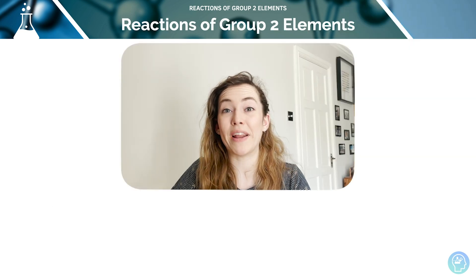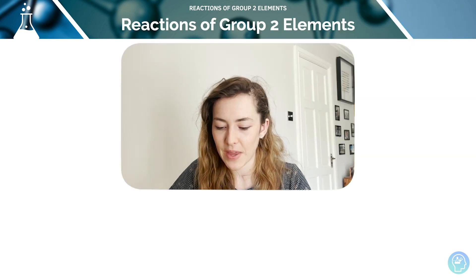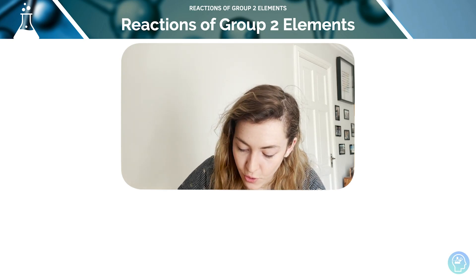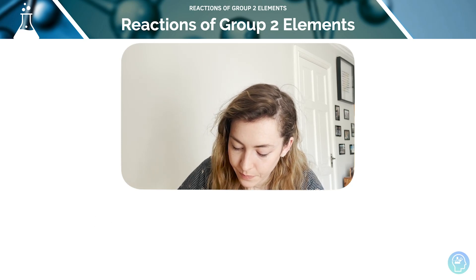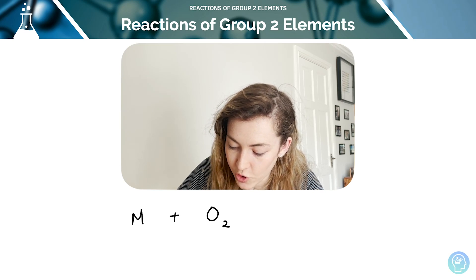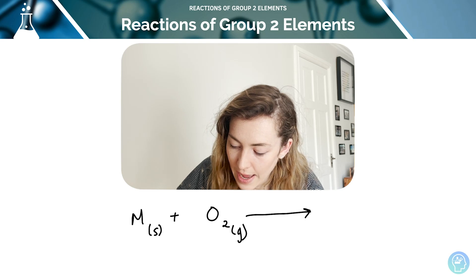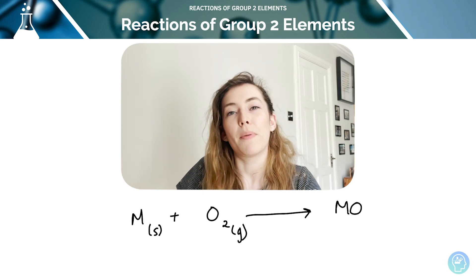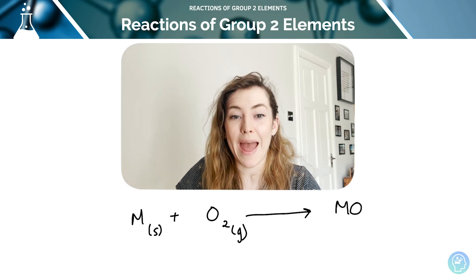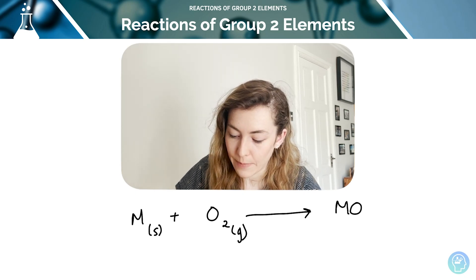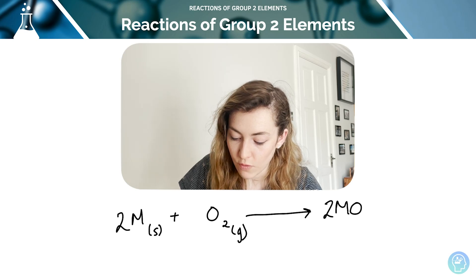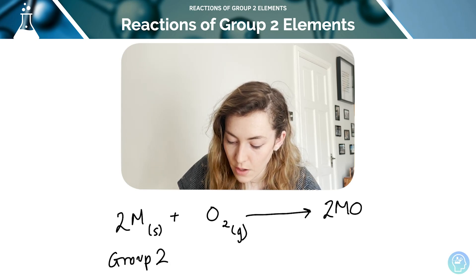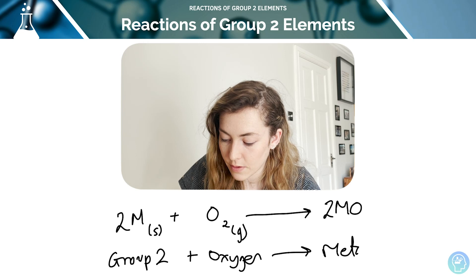The group 2 metals readily react with oxygen to form metal oxides. If we let M represent any group 2 element, we have the solid metal M reacting with gaseous oxygen to make a metal oxide MO. We balance accordingly by putting a 2 in front of M and MO. So a group 2 element plus oxygen gives a metal oxide.